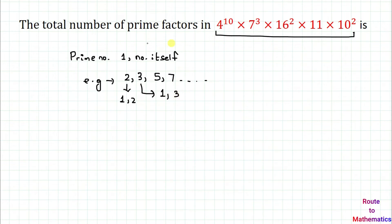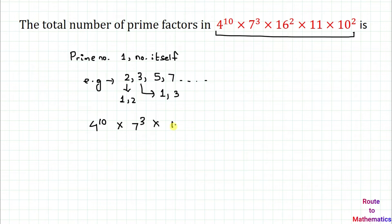So we need to find out the number of prime factors present in this number: 4 to the power 10, multiplied with 7 to the power 3, multiplied with 16 to the power 2, multiplied with 11, multiplied with 10 to the power 2. Now we need to present all the terms in terms of prime numbers.